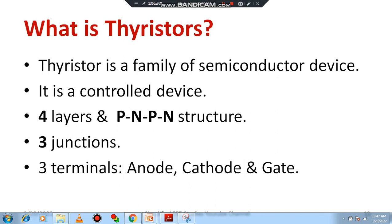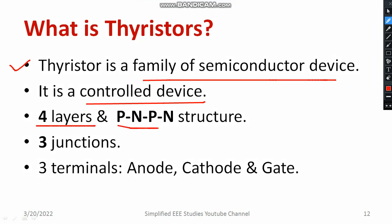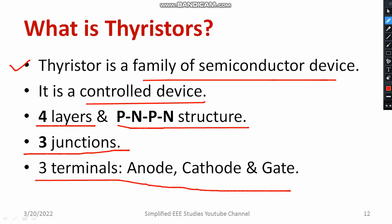What is a Thyristor? Thyristor is a family of semiconductor device. It's a control device. Usually, Thyristor will be having 4 layers and a PNPN structure, and it will be having 3 junctions. Especially if I talk about one of the members of Thyristor, that is SCR — it is having 3 junctions. Usually, the terminals are anode, cathode, and gate. Gate is the control terminal. Thyristor is a control device, unlike power diode.